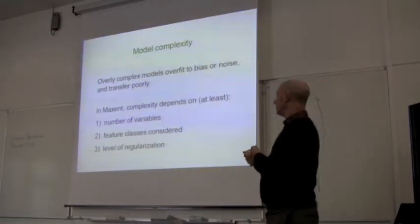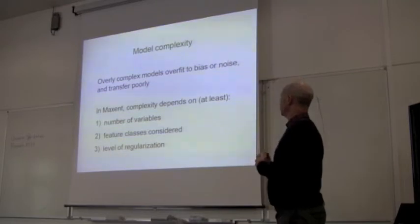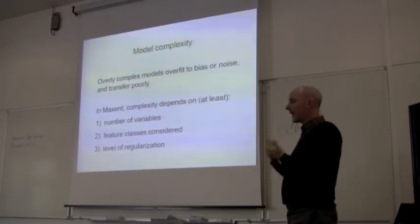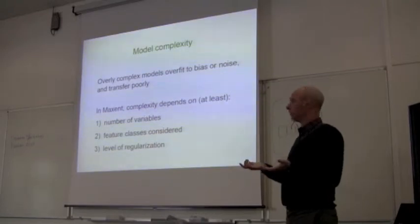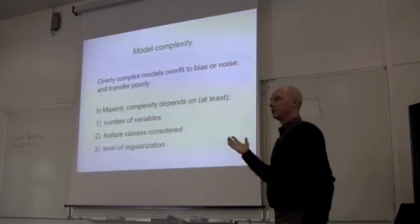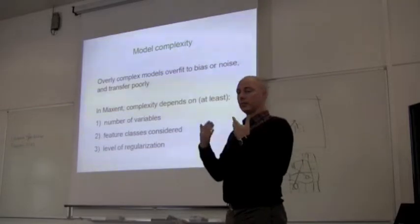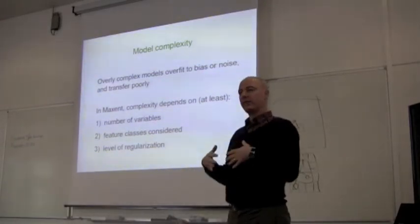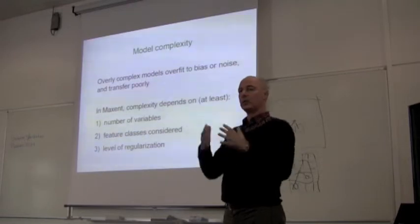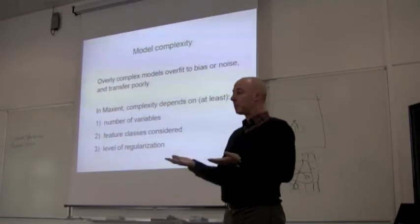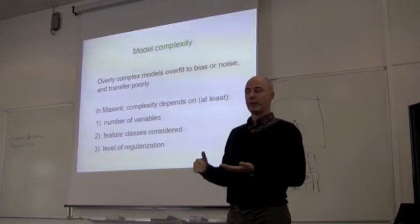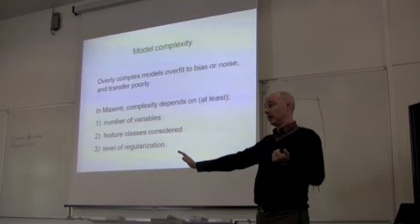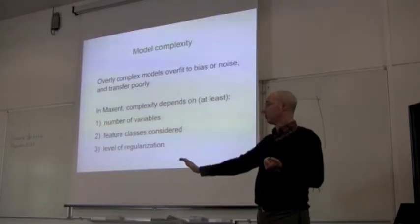So if your model is overly complex, it overfits either to bias or to noise, and then it should transfer poorly. I'm going to use examples from Maxent because for several years I've been working with that technique to try to go deeper and figure out what it's doing and when it works well and when it doesn't, what kind of problems come up and what we can do to make those better. But these principles should be very general and apply to most any technique you would want to use.